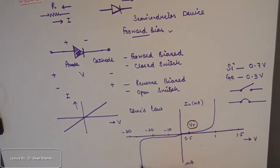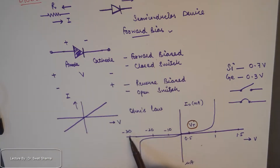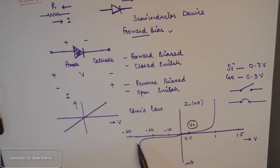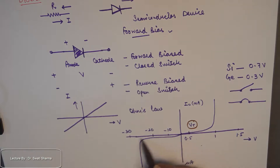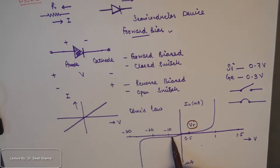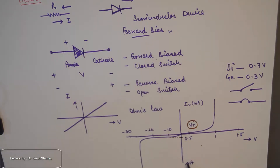In the reverse characteristics, the voltage marks are taken as minus 10, minus 20, and minus 30 volts, and even up to those significant negative voltages the amount of current is almost negligible. This indicates that a diode is not designed to operate in this region. The current on the negative y-axis is measured in microamperes, which is a quite small magnitude.